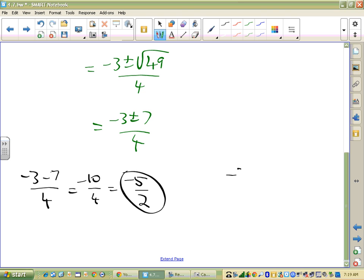And then I get negative 3 plus 7 over 4, which is 4 over 4, which is 1.